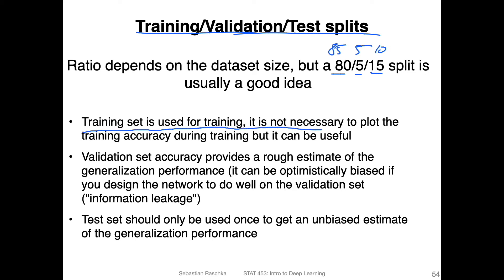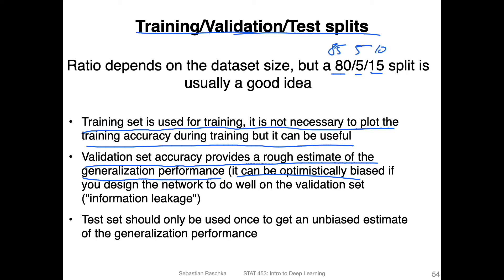To summarize: the training set is used for training, and it's not necessary to plot training accuracy during training, but it can be useful. I find it useful because I can see from the validation and training accuracy curves how much I'm overfitting. The validation set provides a rough estimate of generalization performance — similar to the test set — but because we use the validation set a lot and choose hyperparameters so the model performs well on it, it's not truly independent anymore. We have an optimistic bias, so the validation set usually reports model performance slightly better than on truly unseen data.